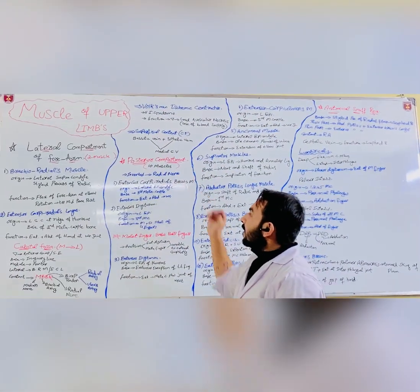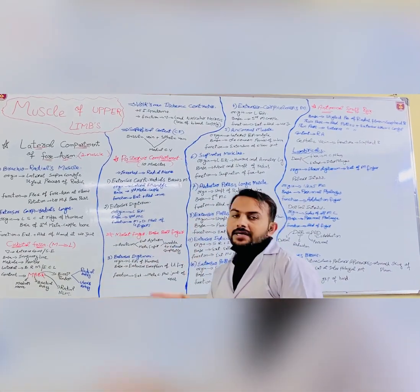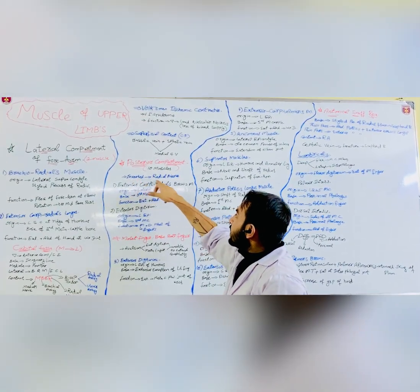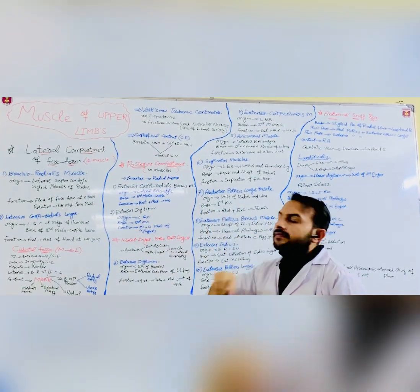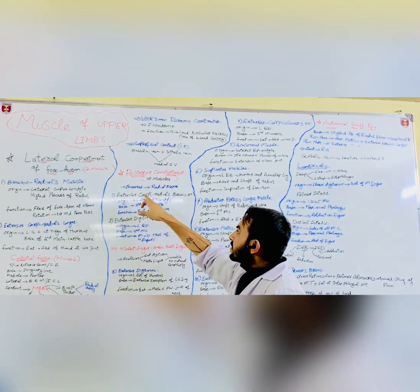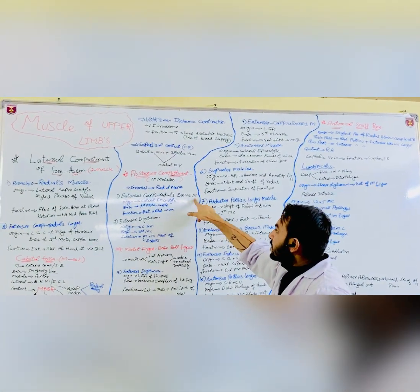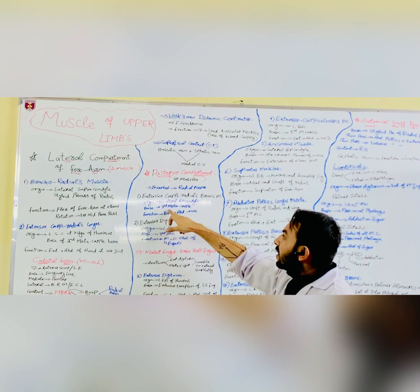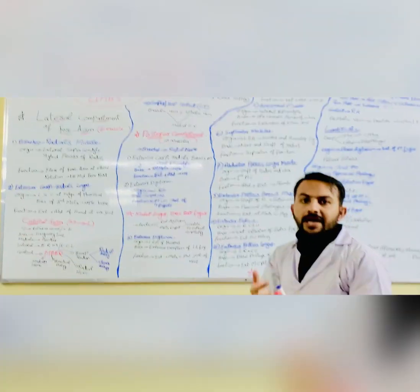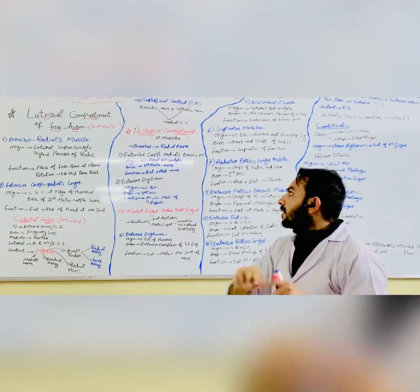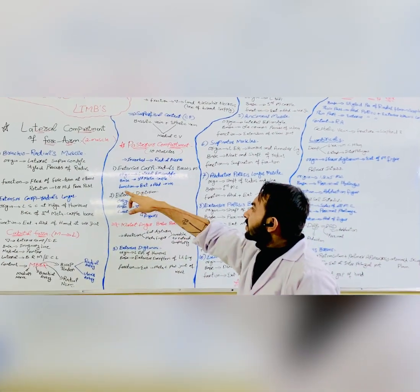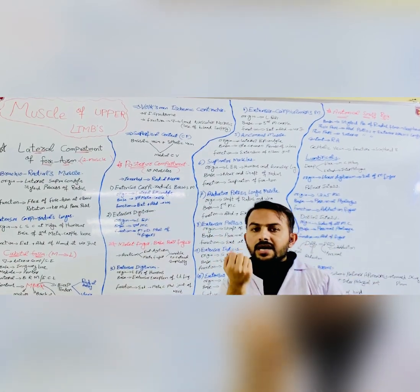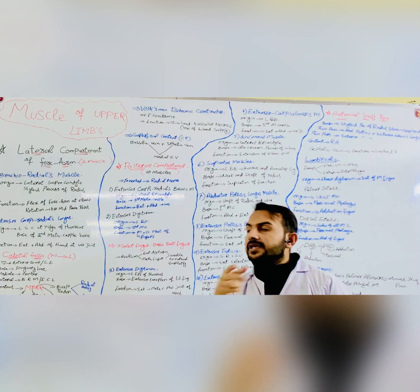Next is the posterior compartment, which has 10 muscles, all supplied by only one nerve — the radial nerve. The first muscle is extensor carpi radialis brevis. Its origin is the lateral epicondyle and its insertion is the base of the third metacarpal. Its function is extension and abduction of the wrist joint.